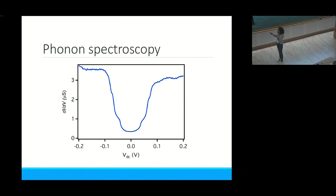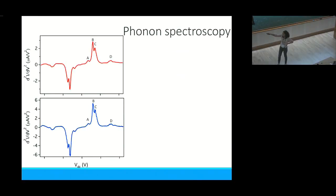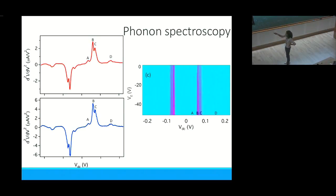Another signature we see are small features. If you look at the second derivative, they show up as nice jumps. This is for graphite and this is for graphene. These are the exact phonon states that contribute to tunneling, and they don't depend on gate voltage. If I plot this as a function of gate voltage, they appear as nice lines indicating these are the phonon modes which contribute most to tunneling.